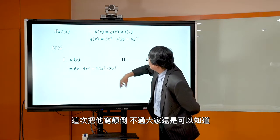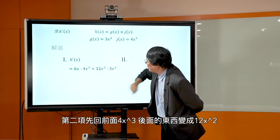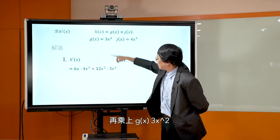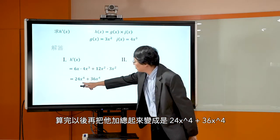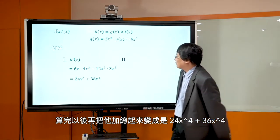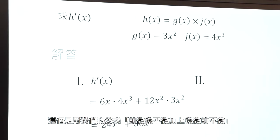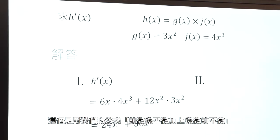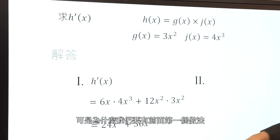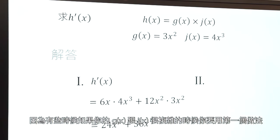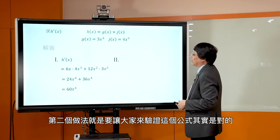但是你可能还记得，第二个做法，我可以先把这个 4x³ 先跟这个 3x² 先相乘，对不对？它会变成 12x⁵，然后再求微分，它就会变成 12 × 5x⁴，会变成 60x⁴。有没有看到两边都是一样的？两边都是一样的。